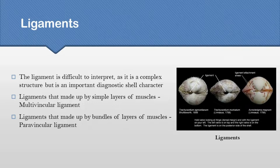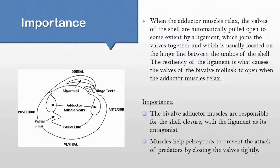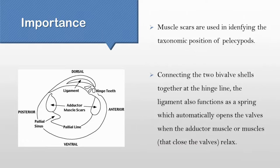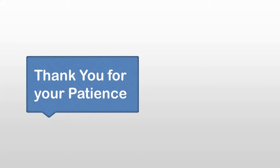The roles of musculature and ligaments in the life of bivalves are inevitable. The adductor muscles permit the animal to close its valves tightly when it is exposed to air by low water level or when it is attacked by a predator. Muscle scars are used in identifying the taxonomic position of Pelecypoda. The ligament acts as a spring to open the valves when the adductor muscle relaxes. That was my presentation about the musculature and ligaments of Pelecypoda. Thank you everyone for your patience. Assalamualaikum.